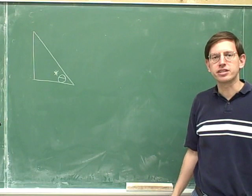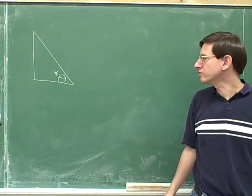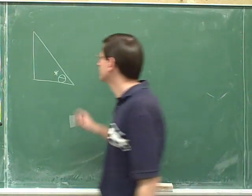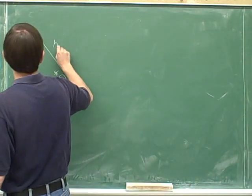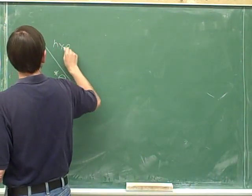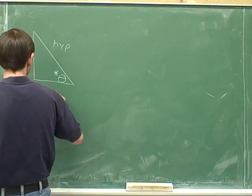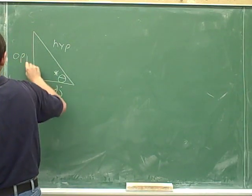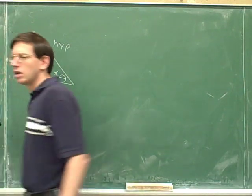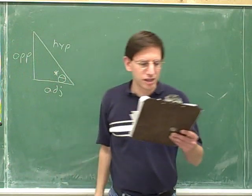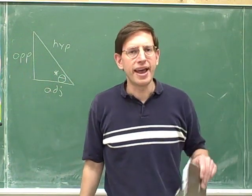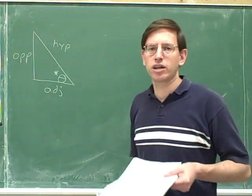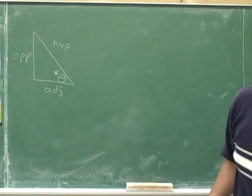Label the opposite, adjacent, and hypotenuse. Now we're ready to introduce sine, cosine, and tangent.